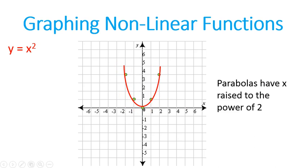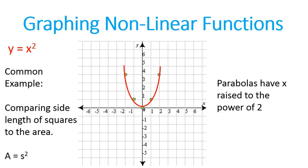All right? So that's one very common example of a nonlinear function, y is equal to x squared. A common example with word problems of this is comparing the side length of a square to the area of a square, because the area is equal to the side length squared. So that would be a common word problem type comparison of using this nonlinear function.